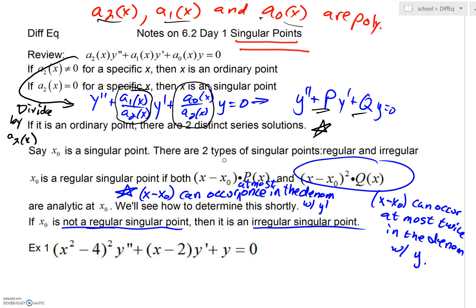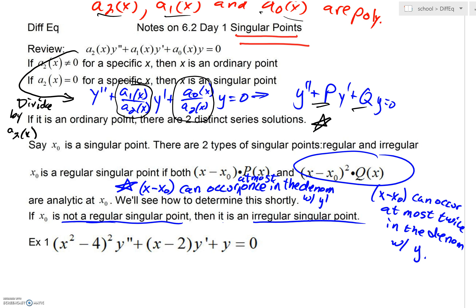So we saw yesterday that if you have an ordinary point, life is good, you'll be able to get two distinct series solutions. But what about if you have a singular point? Well, that's really where we're focusing for our remaining days here in this unit. If x₀ is a singular point, there are two types of singular points. We could have regular and irregular. Today, honestly, our focus isn't so much on solving a particular differential equation. Rather, it's just getting skilled with being able to tell the difference between a regular singularity and an irregular singularity.